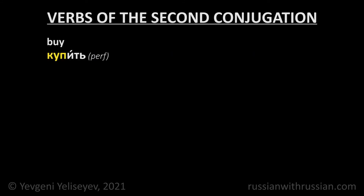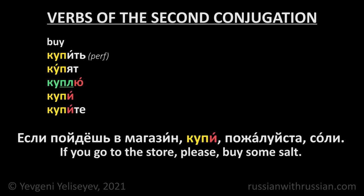Купить — To buy. Они купят — the stem is КУП. Я куплю — the stress falls on the ending, so the informal imperative form ends in the stressed И: Купи, Купите. Если пойдёшь в магазин, купи, пожалуйста, соли — If you go to the store, please buy some salt.